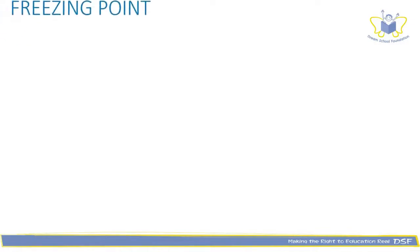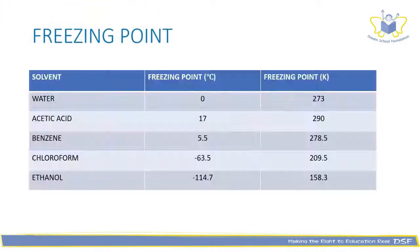Here are the freezing points of a few liquids. Water has a freezing point of 0°C or 273 K. Acetic acid has 290 K. Benzene has a freezing point of 278.5 K. Chloroform has a freezing point of 209.5 K, and ethanol has a freezing point of 158.3 K.